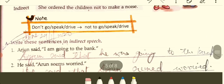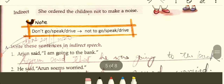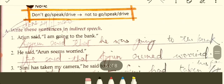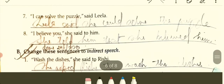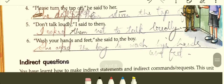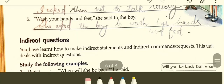You are asked to write the sentences in indirect speech. Arun said, 'I am going to work.' Indirect: Arun said that he was going to the bank. He said, 'Arun seems worried.' Indirect: He said that Arun seemed worried. 'Seems' changes to 'seemed.' She said to him, 'I believe you.' Indirect: She told him that she believed him. Direct: 'Wash the dishes.' Indirect: She ordered him to wash the dishes. 'Wash your hands and feet' — she asked the boy to wash his hands and feet, or she ordered the boy to wash his hands and feet. If the word 'please' is present, use 'requested.'